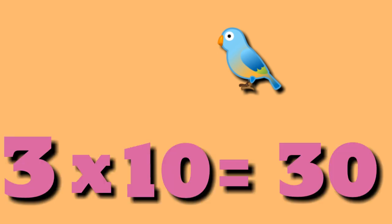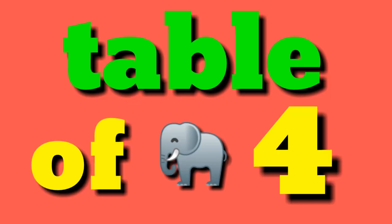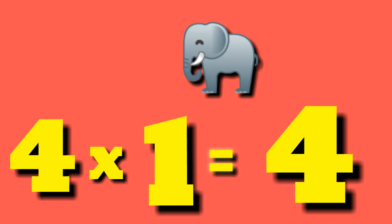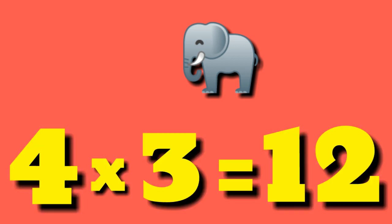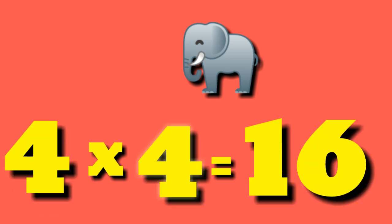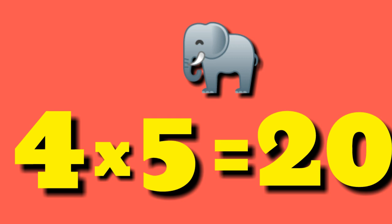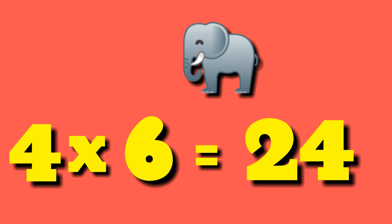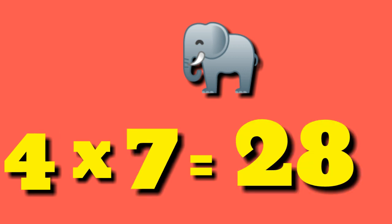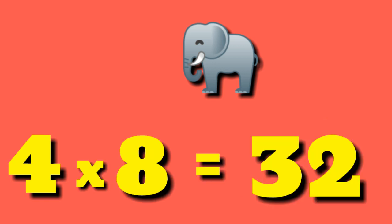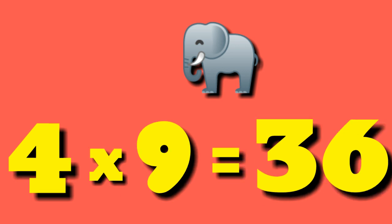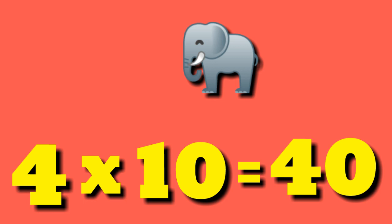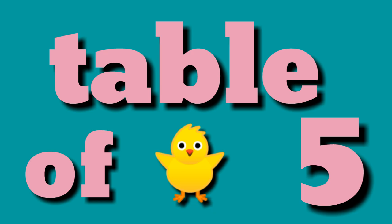Table of 4. 4 ones are 4, 4 twos are 8, 4 threes are 12, 4 fours are 16, 4 fives are 20, 4 sixes are 24, 4 sevens are 28, 4 eights are 32, 4 nines are 36, 4 tens are 40.